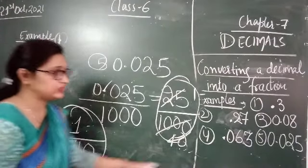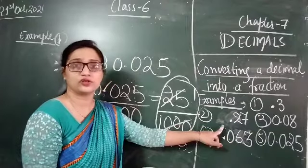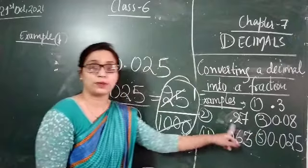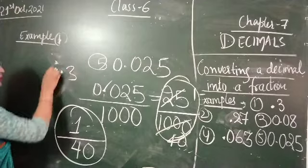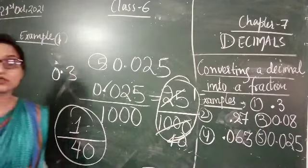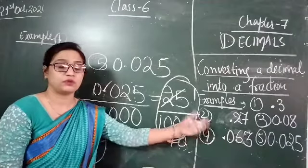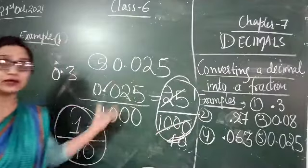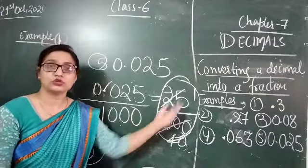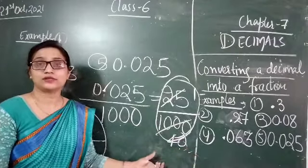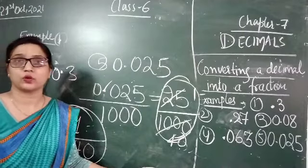Do not get confused about the zero before the decimal point. That zero is always understood to be there. If 0.3 is written without the leading zero, it is understood that zero is there. In some questions the zero before the decimal is written, in others it is not — but before the decimal, zero should always be there. So in this way, we can convert a decimal into a fraction in its simplest form. Thank you.